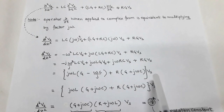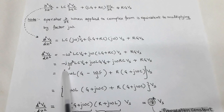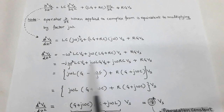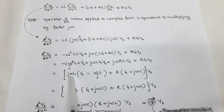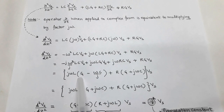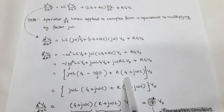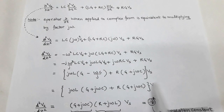We take V_s as common. For the first term, we multiply and divide by j, allowing us to take jωL as a common factor. In the first two terms we take out jωL and get (G − ωC/j). From the third and fourth terms we take out R, giving (G + jωC). V_s is common in all four terms, so we take it outside.